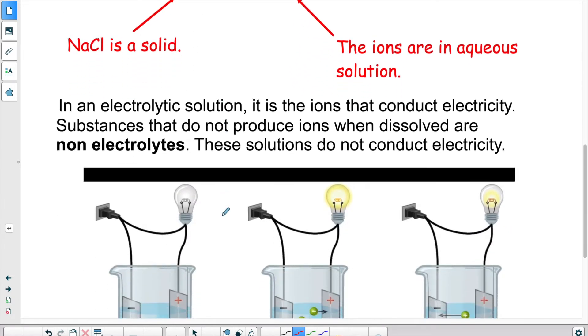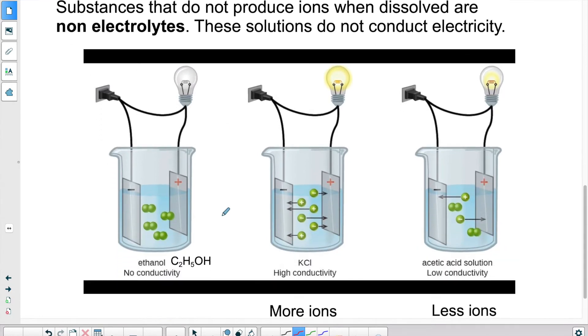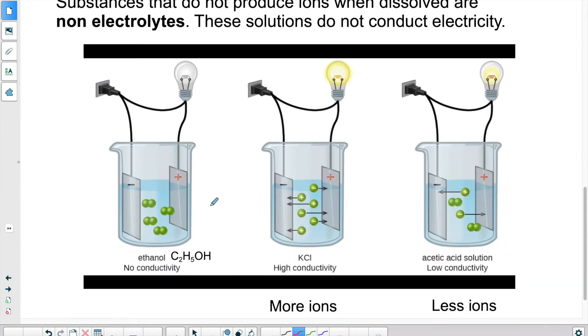So it's those ions that conduct the electricity in a solution. So you can have a solution that will not conduct at all. In this case we have an example here. We have ethanol. So ethanol is a type of alcohol. The substance does not separate, does not dissociate when put in water. So it will dissolve, but the molecules themselves don't split up. So they don't dissociate. This will not conduct electricity. As you can see here, the light bulb is not lit.